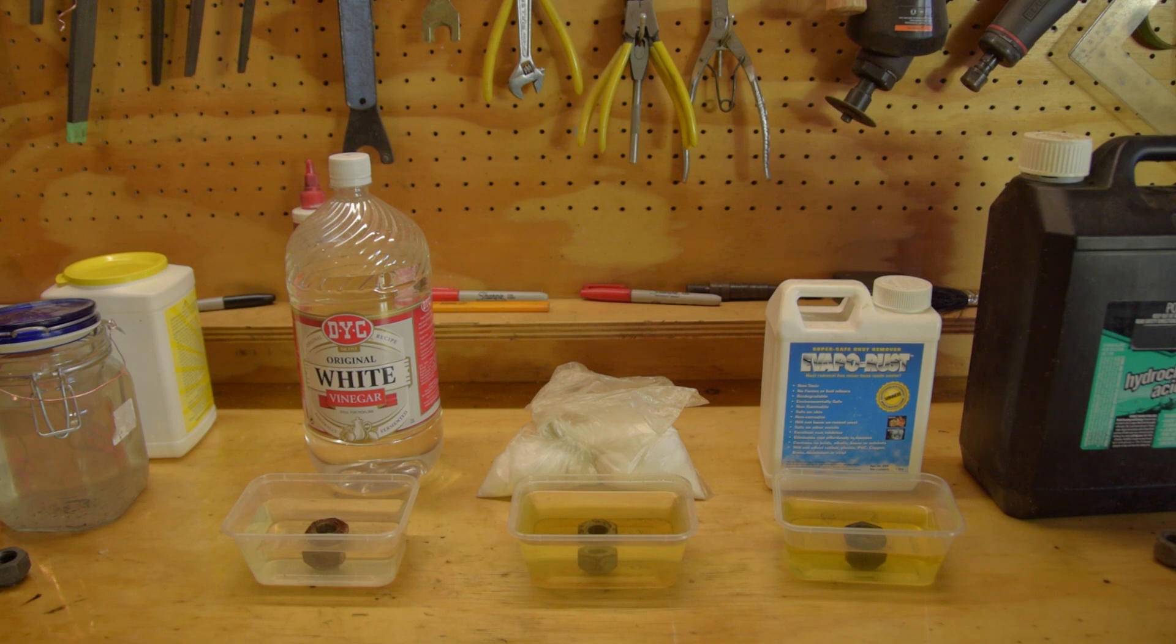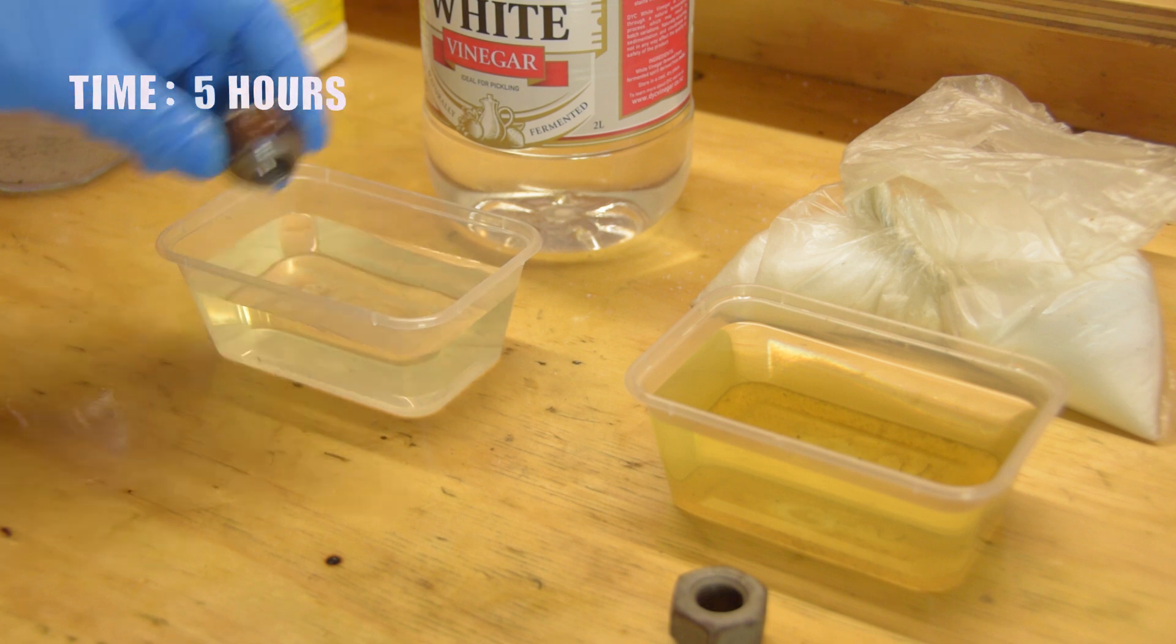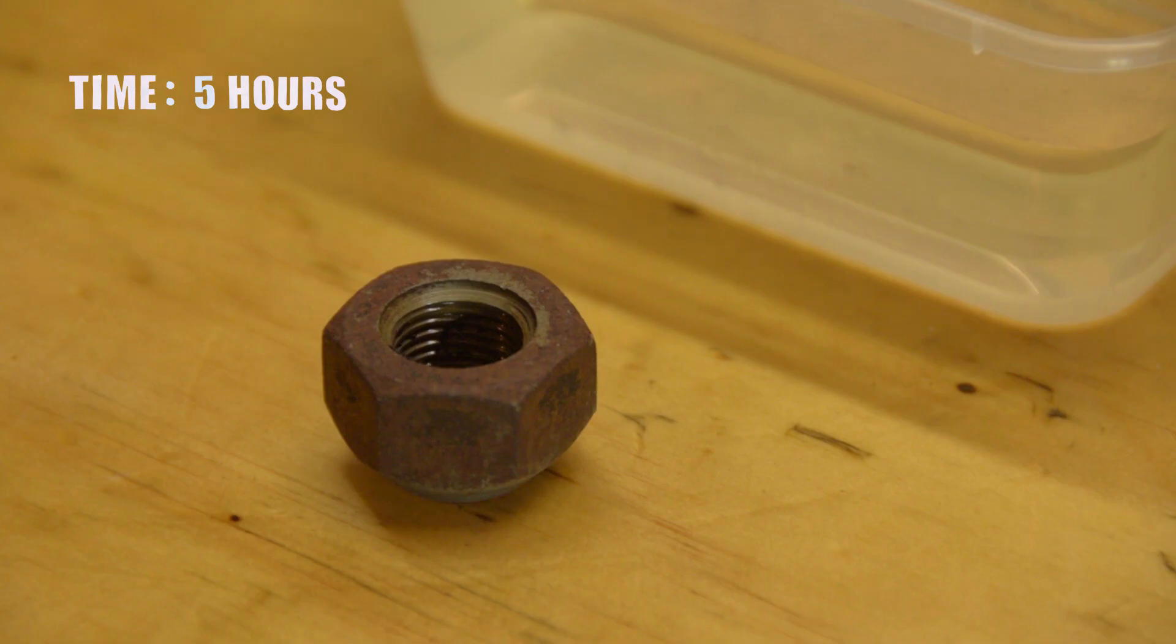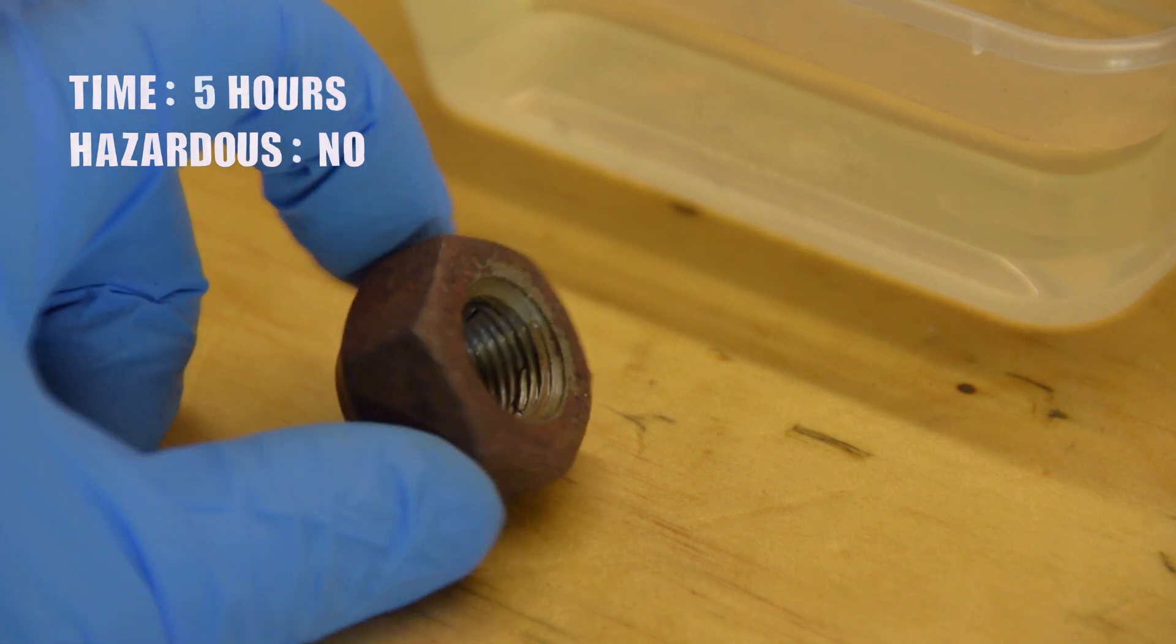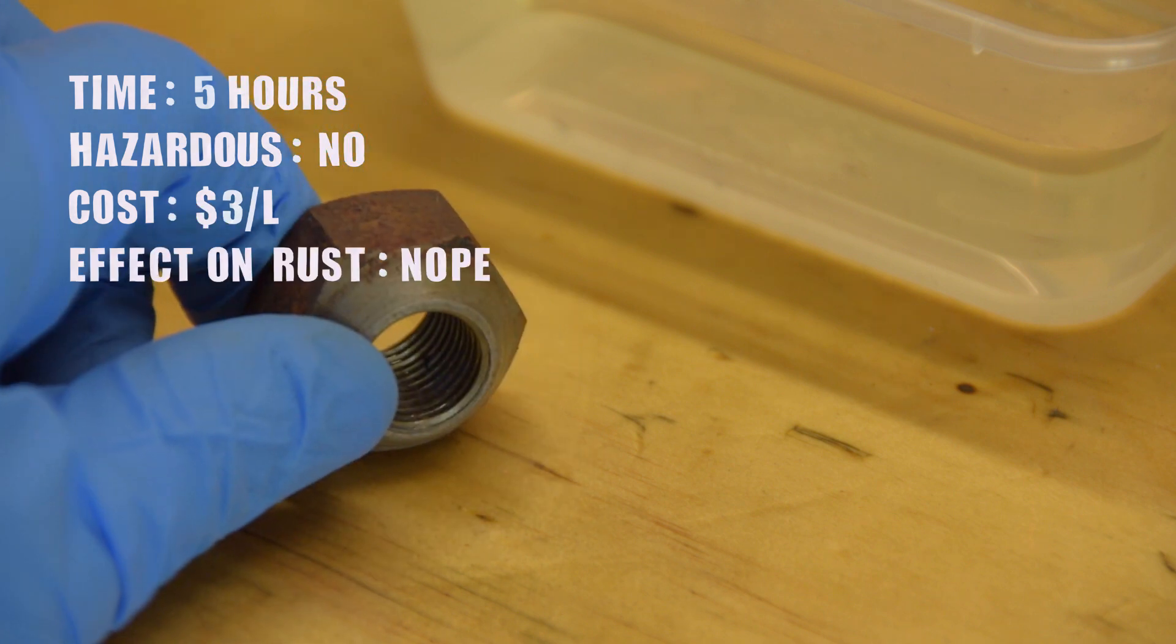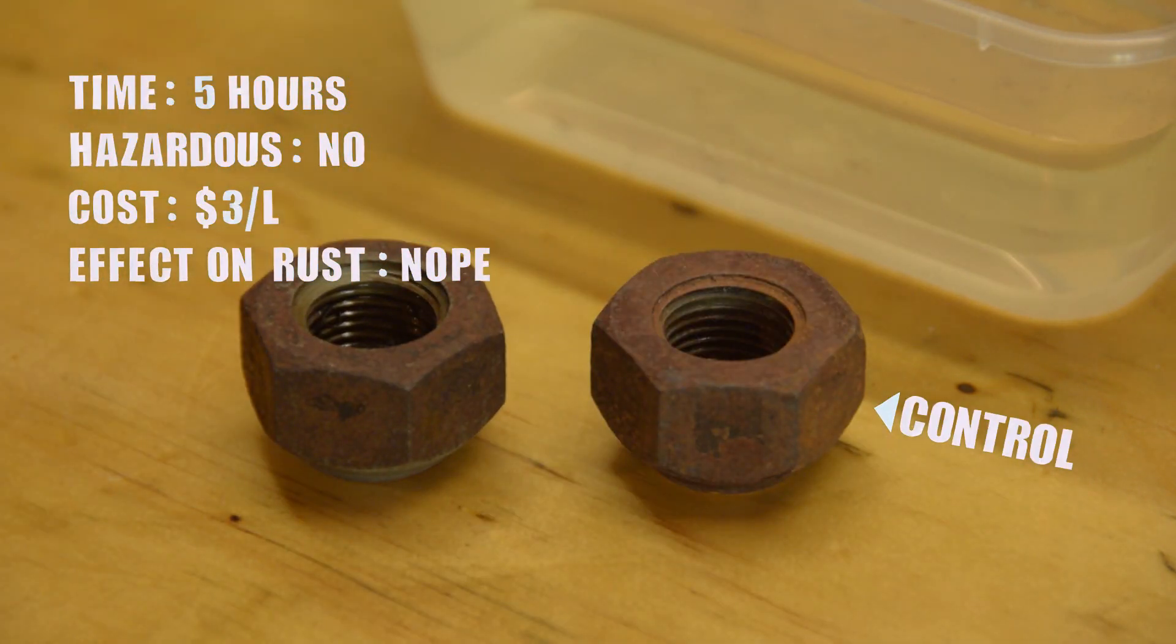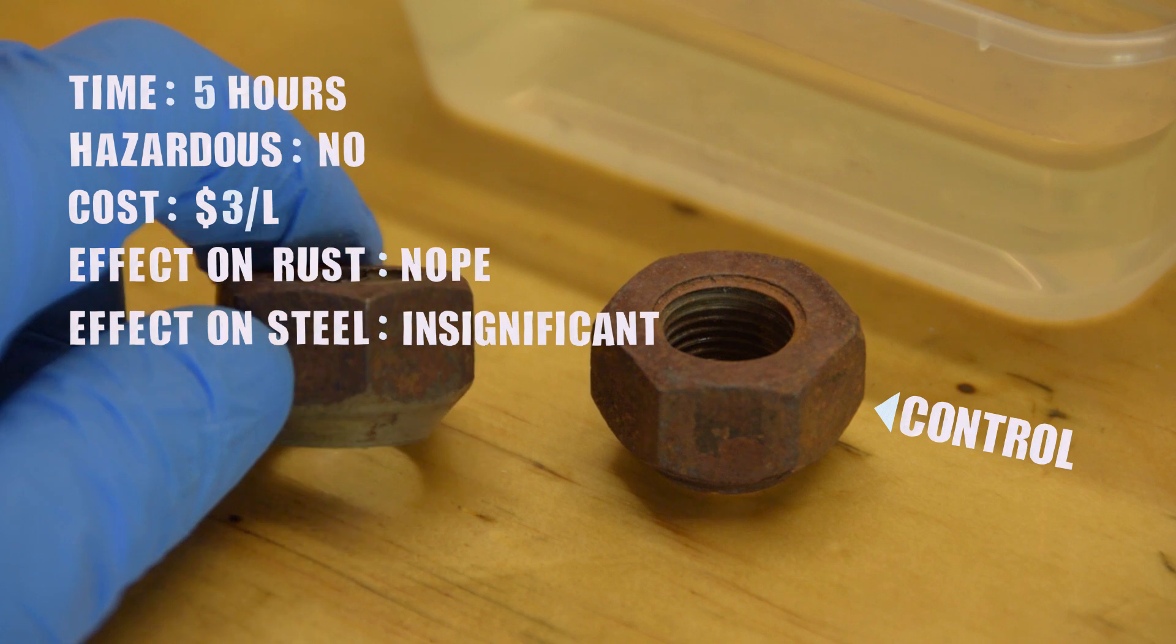Half a day is how long I'm leaving the parts in the vinegar. I'm not interested in waiting a week to remove rust. Vinegar is very weak, and not at all hazardous. It costs about three dollars per litre. On rust it's ineffective. There are cheaper methods that work much faster. Technically vinegar will corrode good steel, but not to any noticeable extent in any reasonable time frame.